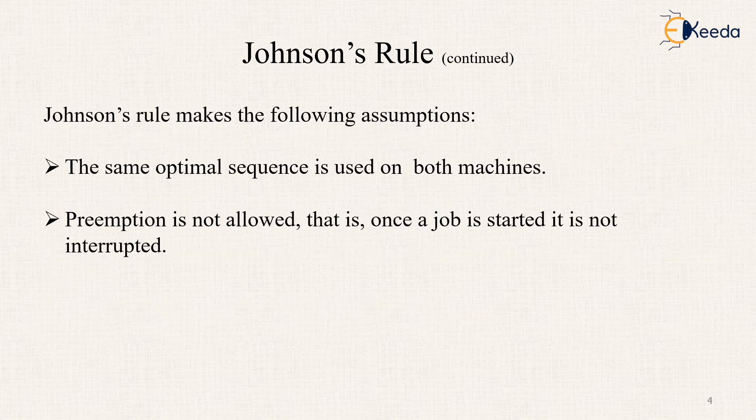For example, we see with this the following assumptions. Example will be discussed later on. The Johnson's Rule are having the following assumptions such as the same optimal sequence is used on both machines. The preemption is not allowed, that once a job is started it is not interrupted until the final solution is obtained.